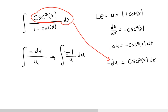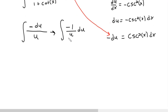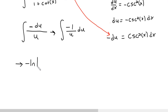This portion gets replaced by negative du, because cosecant squared x dx equals du. So I get negative du up here, and 1 plus cotangent x is just u. You could rewrite this as negative 1 over u du. Now we just integrate like we normally would. The integral of 1 over u is simply ln of the absolute value of u, so I get negative natural log of the absolute value of u plus c.